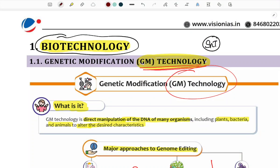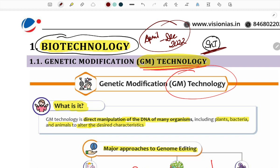Let's see science and technology first — PTE365 lecture on biotechnology. This was covered in April, not December 2022. Key portions for science and technology include important topics, the first being biotechnology, which comes early in the news. Key items to discuss: number one, GM technology.